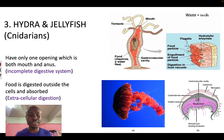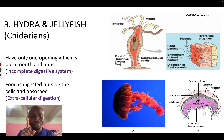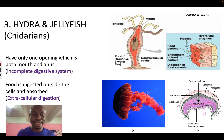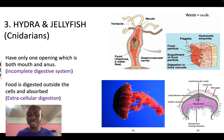Another example is the jellyfish, which also has one opening that is both the mouth and the anus. Food will go into the gastrovascular cavity and is digested, and the waste product again comes out from this one hole.